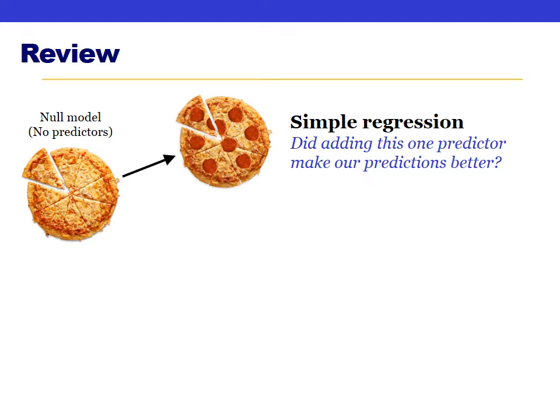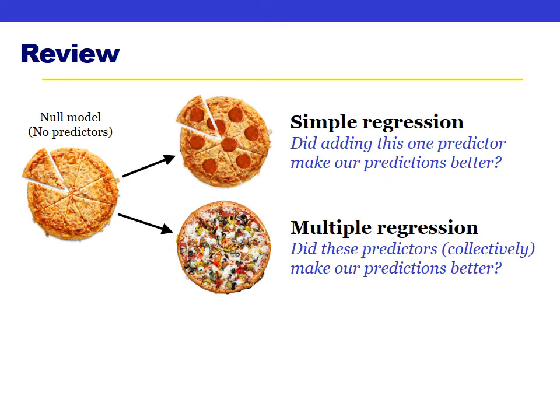Last week we talked about multiple regression, specifically two types. First, simultaneous multiple regression, where we have multiple predictors all being used to predict the same outcome variable — throwing all the predictors into the model at once, like throwing a bunch of toppings onto a pizza at the same time. The first question we ask is: did these predictors collectively make our predictions better? We then look at each individual predictor in the coefficients table in SPSS, and we should also check the assumption of collinearity.